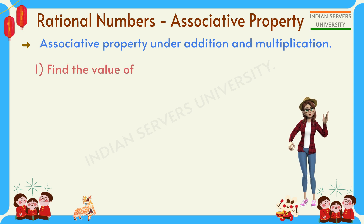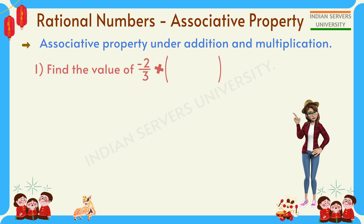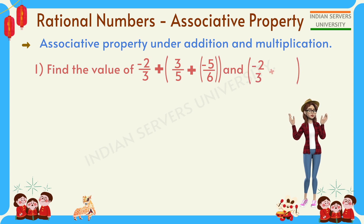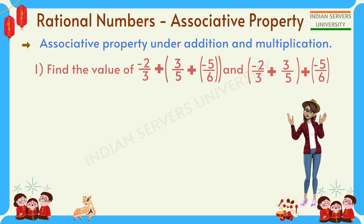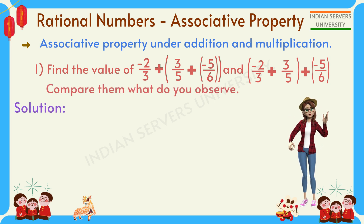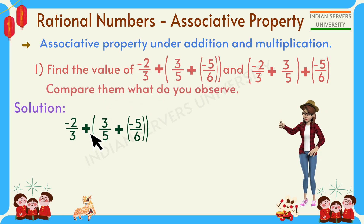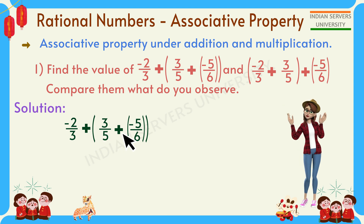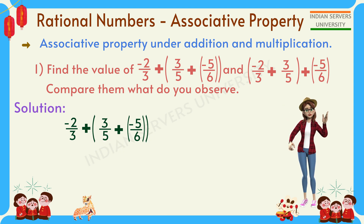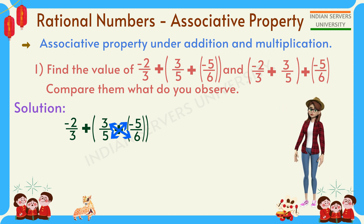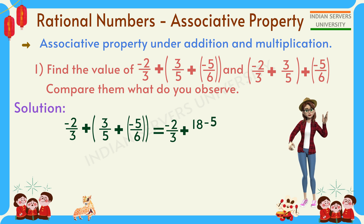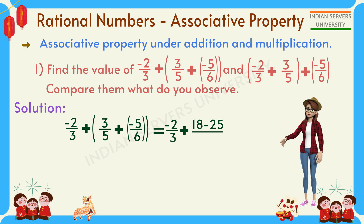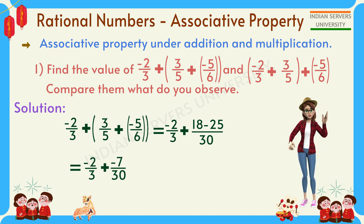Find the value of ((-2/3 + 3/5) + (-5/6)) and (-2/3 + (3/5 + (-5/6))) and compare them. Here, for the first expression, solve the bracket first using cross multiplication: 6 × 3 = 18, 5 × (-5) = -25, denominator 5 × 6 = 30. So we get -2/3 + (-7/30).